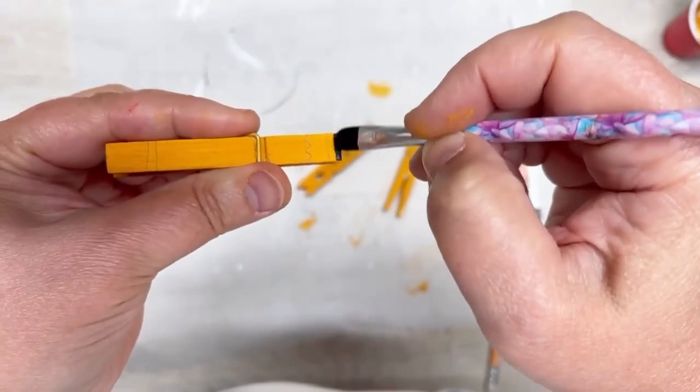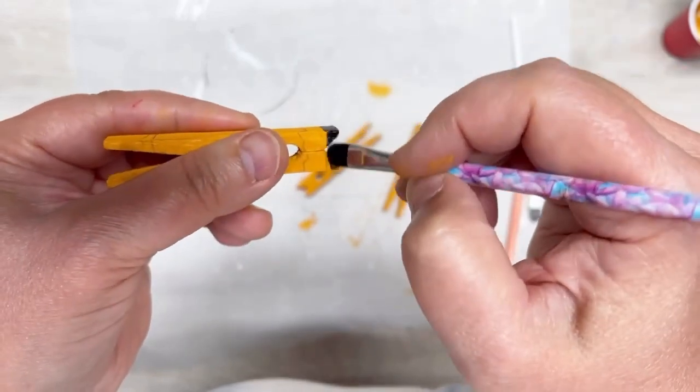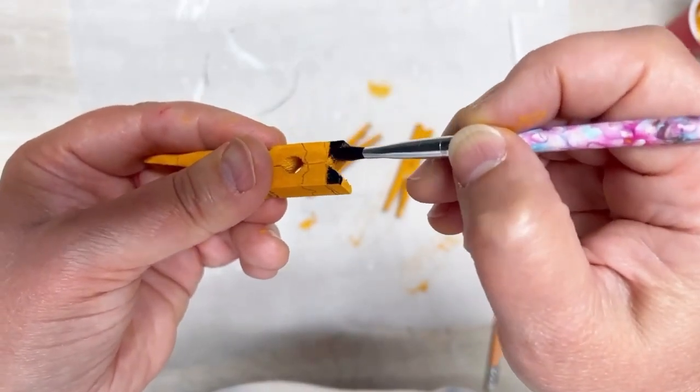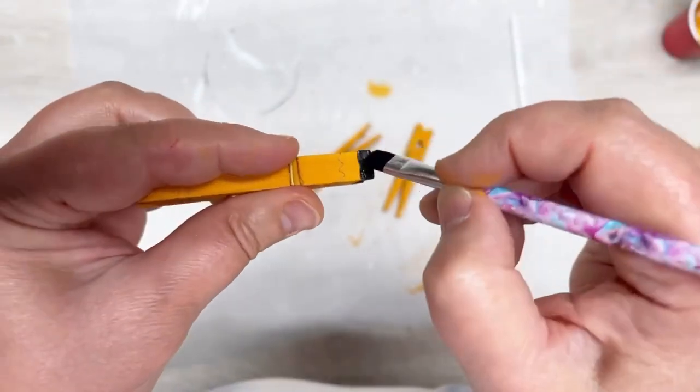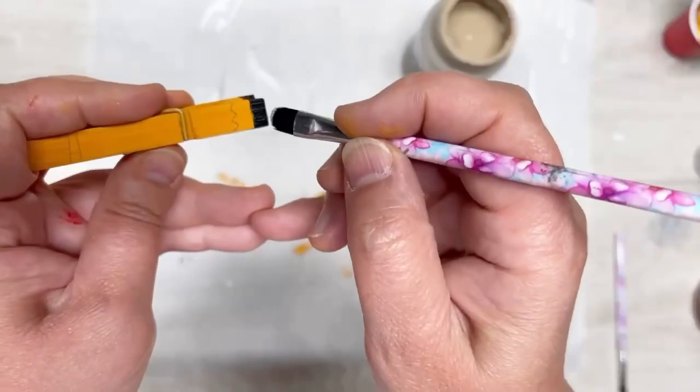Then we're going to fill it in. I'm using chalk paint, nothing crazy, and I'm using a makeup brush. I do the bottom part black for the ink or the lead, and I let it dry.